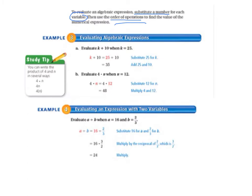Letter A, evaluate k plus 10 when k equals 25. So we substitute 25 for k. So k plus 10 equals 25 plus 10. And 25 plus 10 equals 35. So we added 25 and 10.